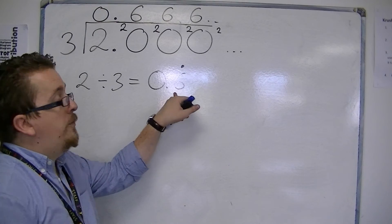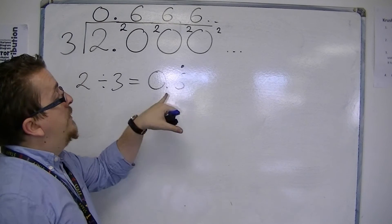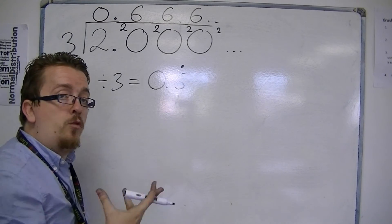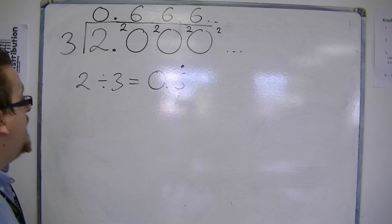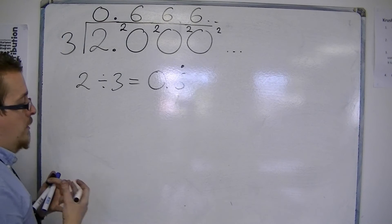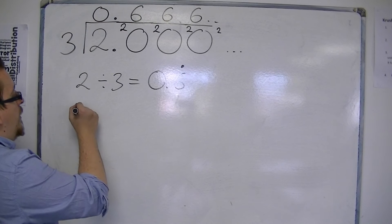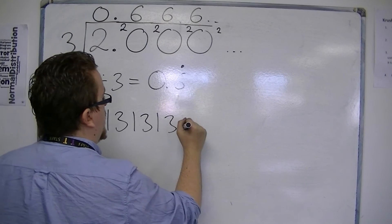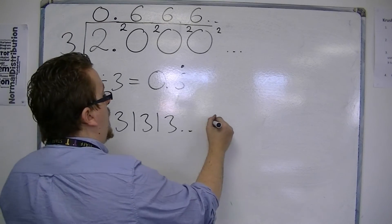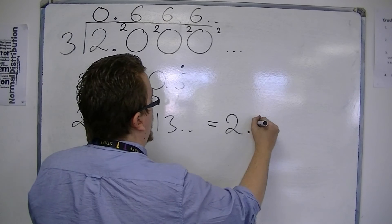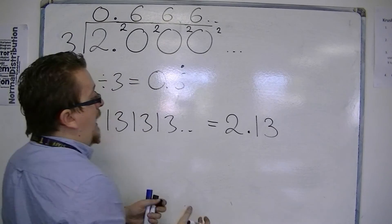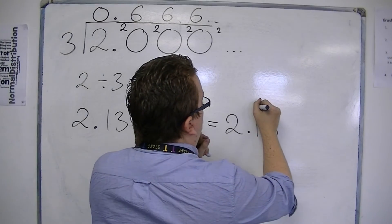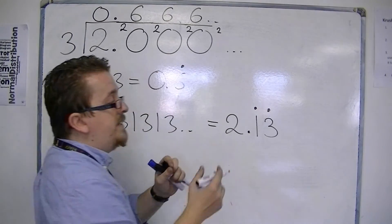So the 6, if you've just got one number that is repeating, then we just put one dot over the top of the number that is repeating. You can have decimals that look like this: 2.13, 1-3, 1-3, 1-3, etc. And we write that as 2.13, and we put a dot over the numbers that are repeating, the 1 and the 3.